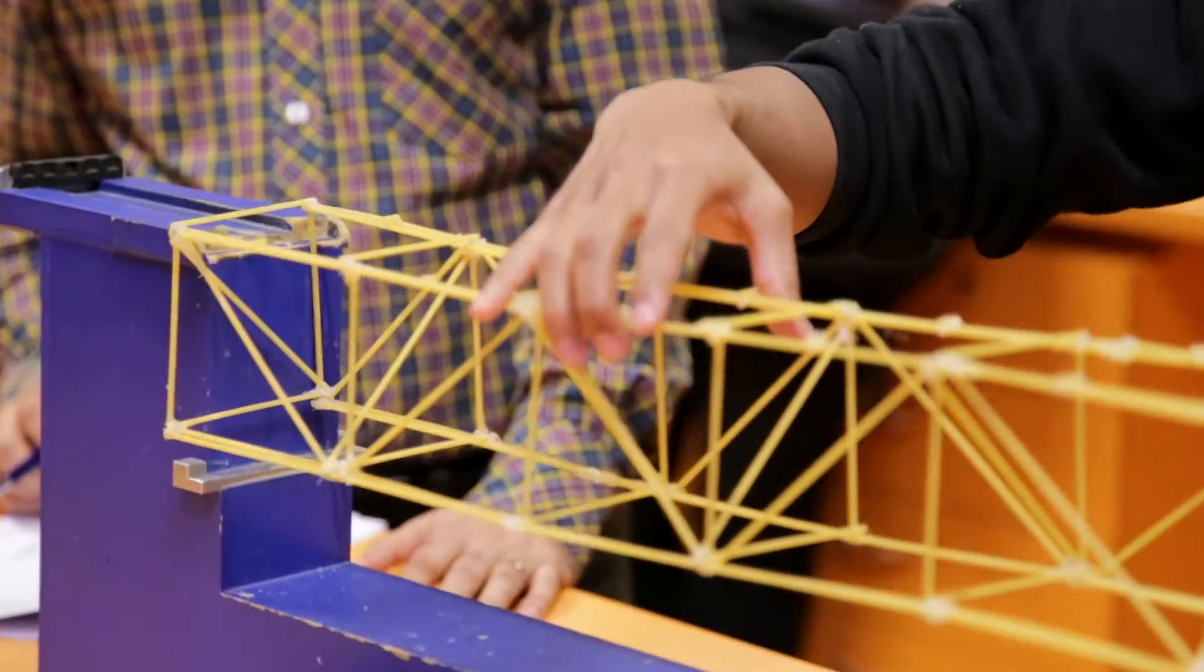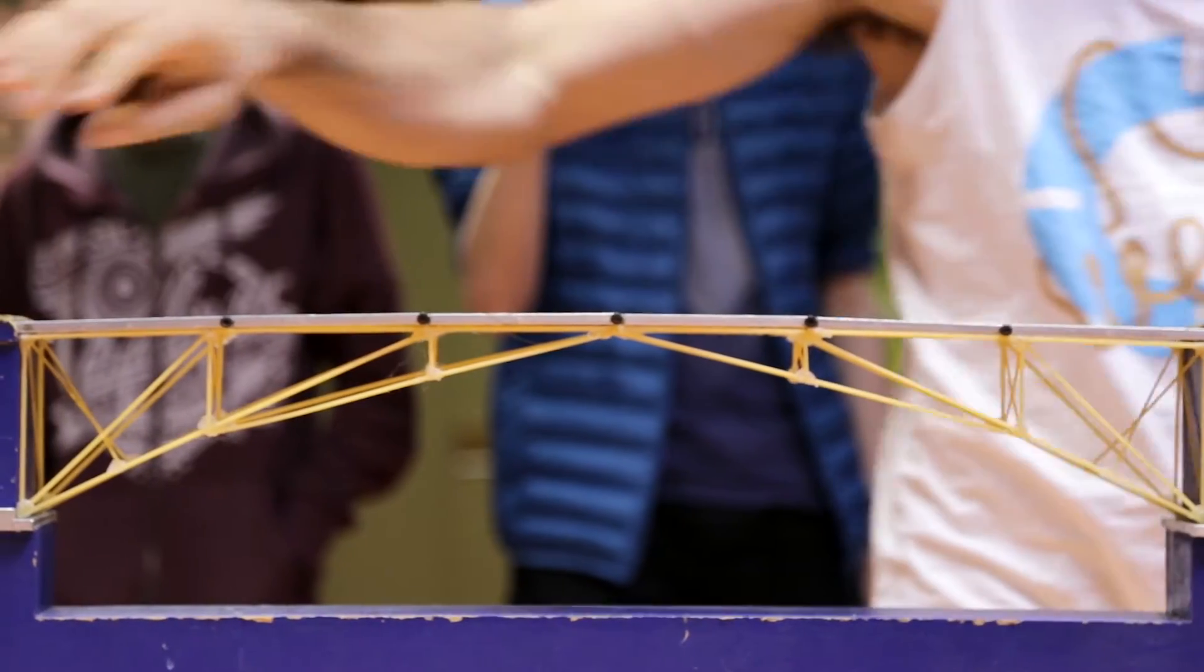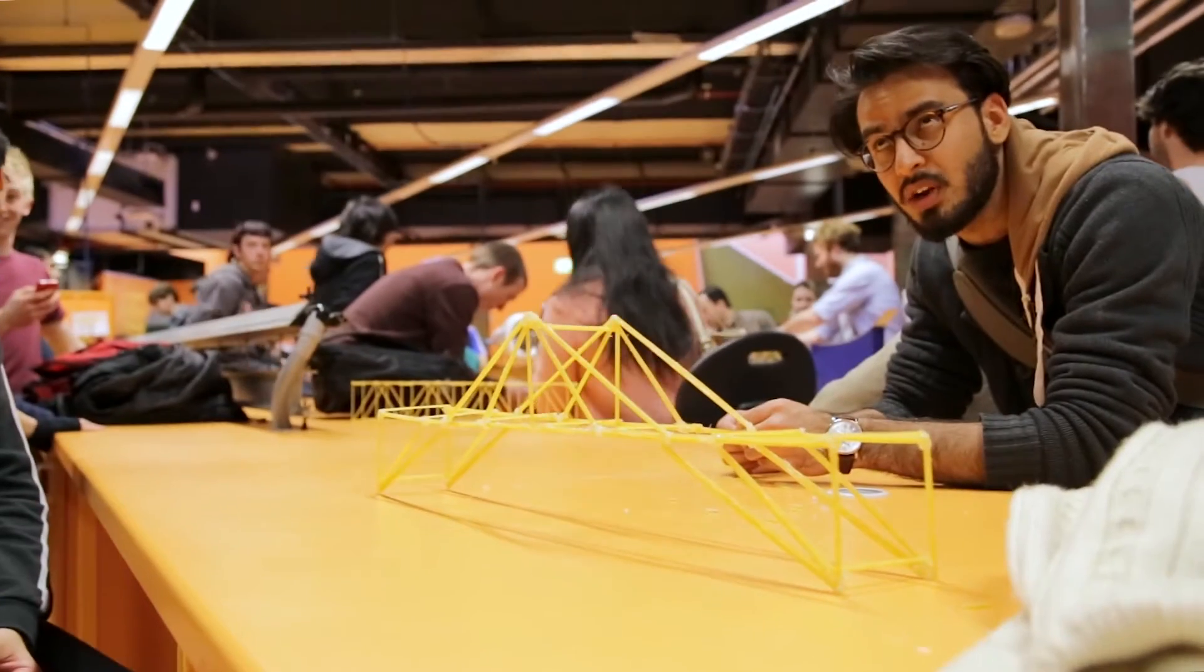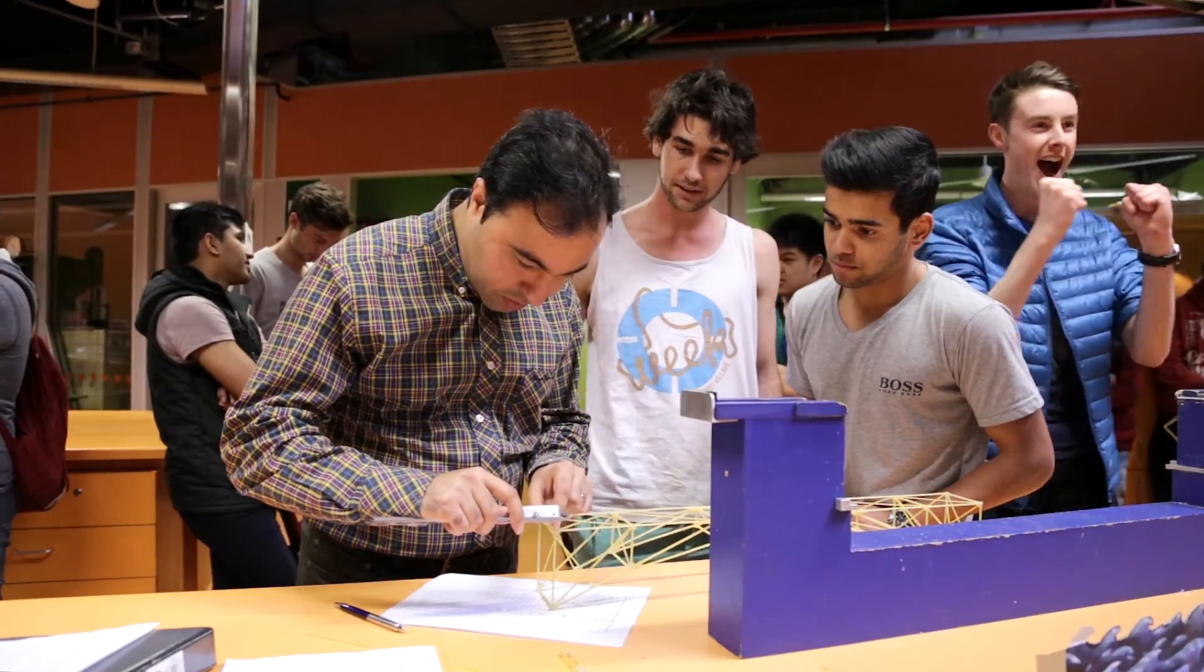In the group, we had to research different types of bridges that are out there—truss, beam, arch, suspension bridges—and work out what types were applicable to spaghetti design.